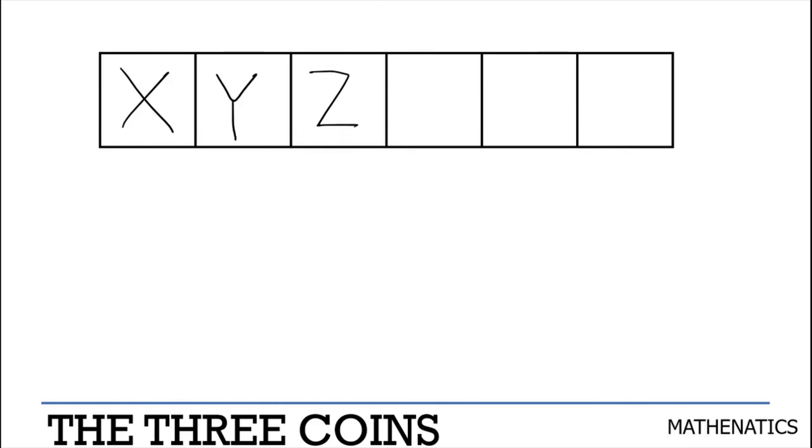Alright, so the problem states, let three coins or letters X, Y, and Z be placed on a board like so. Your goal is to move these to this position.